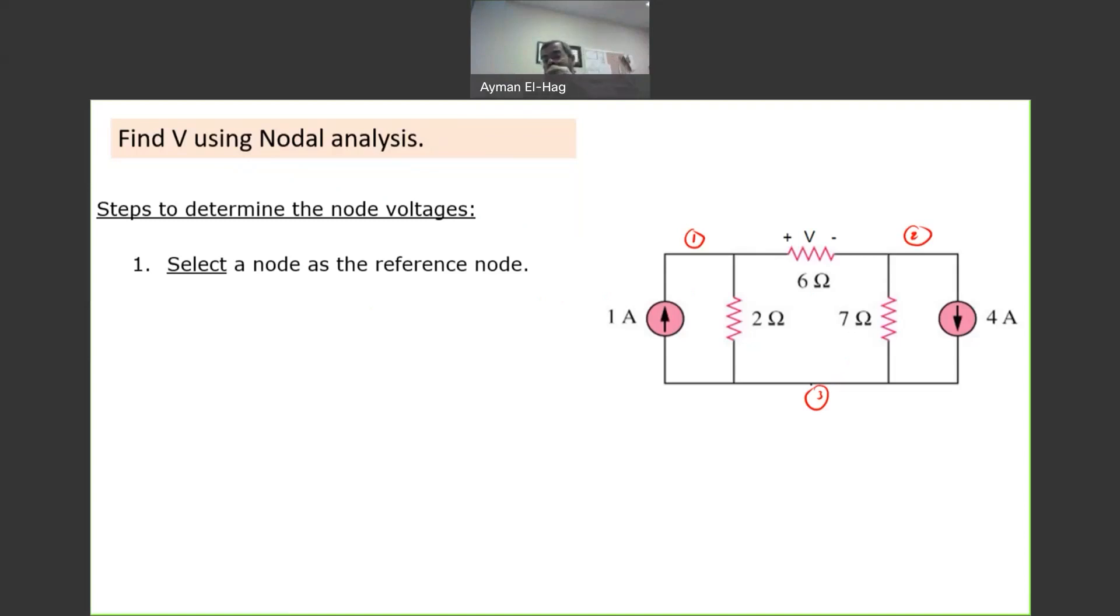But when we have voltage sources, then it could make a difference selecting the reference from one point to another. So, let me select it here. So, what is this reference? This reference means that my voltage is set to zero. So, everything else I will calculate is with respect to this zero reference voltage.